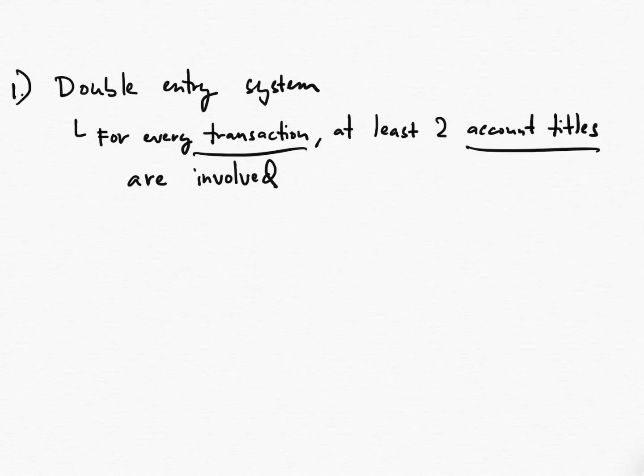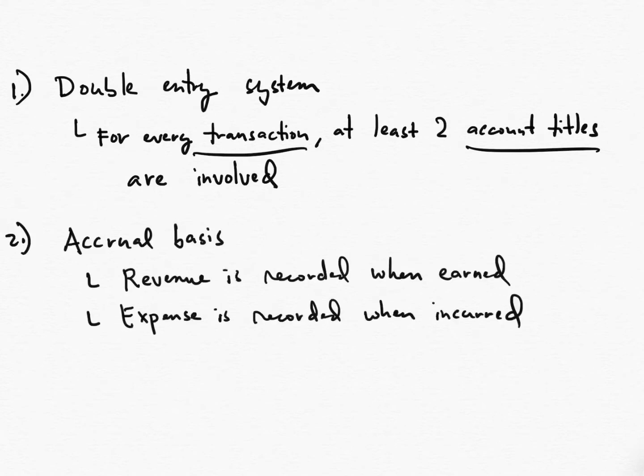You might also notice account titles here. For that one, I will discuss it in the next video. For now, I will just leave it there. So let's have the second concept. For the second one, we have the accrual basis. Under accrual basis, we have two. Number one is the revenue recognition principle, which states that revenue is recorded when earned.